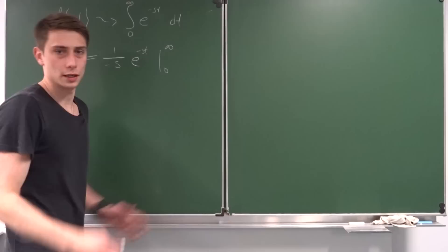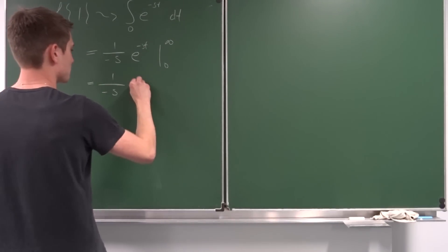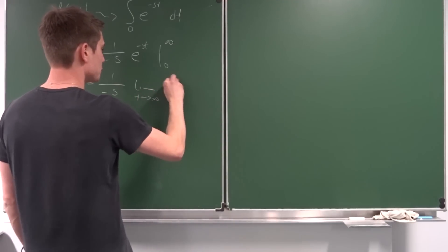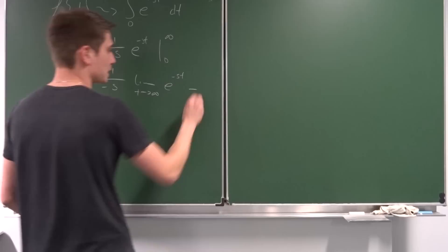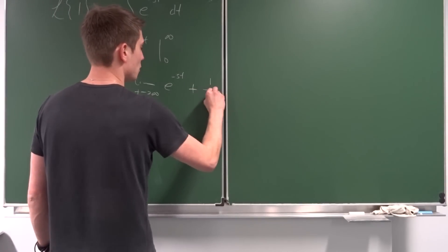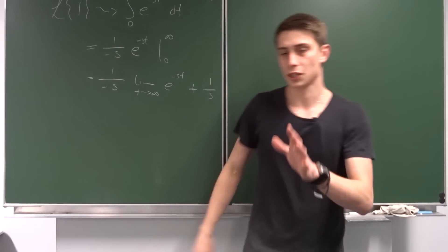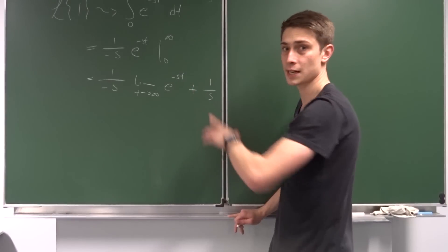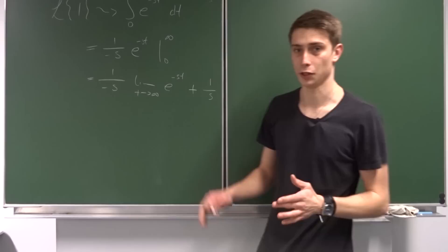Now we're applying the limits to this function. So this is one over minus s times the limit as t approaches infinity of e to the minus st, and minus and minus becomes positive, so plus one over s times e to the zero. We know the solution to this: it's one over s, under the condition that the real part of s is greater than zero because we want the negative exponent.